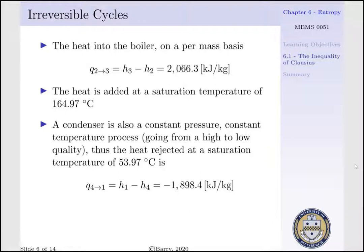This heat is added at our saturation temperature of 164.97°C, which we'll consider our boundary temperature. The condenser, also a constant-pressure process, takes our fluid from a high quality to a low quality. The heat rejected, going from state 4 to state 1, is H1 minus H4, which equals −1898.4 kJ per kg, occurring at our saturation temperature of 53.97°C.